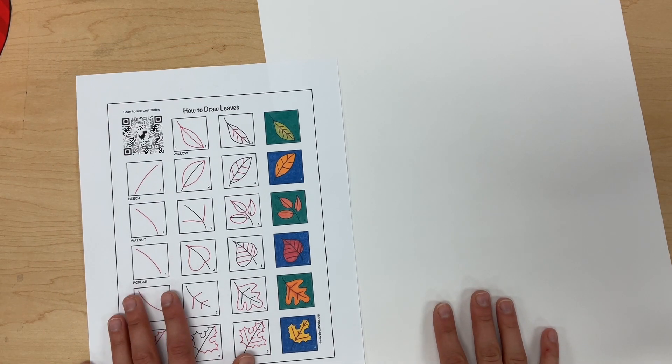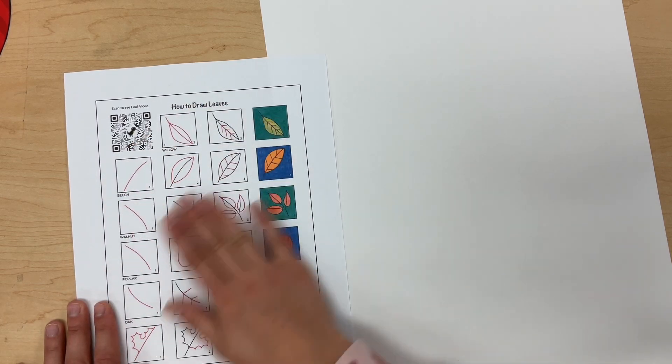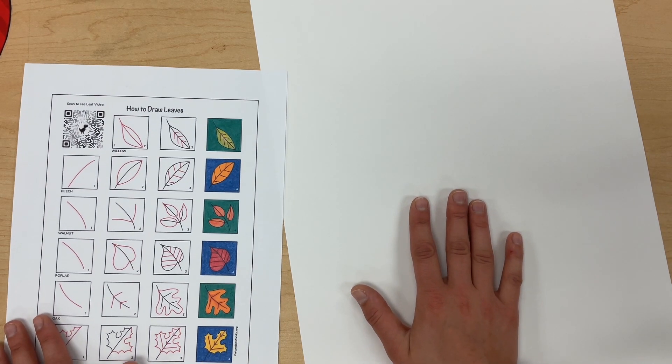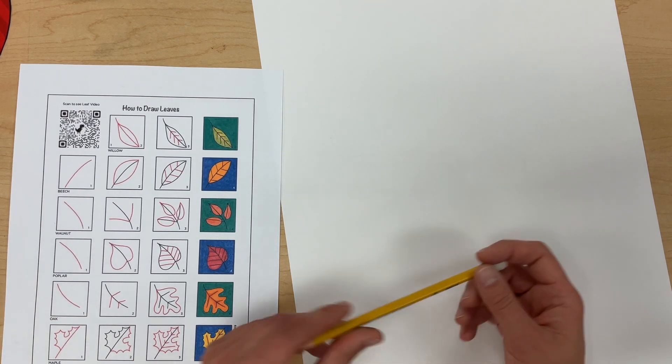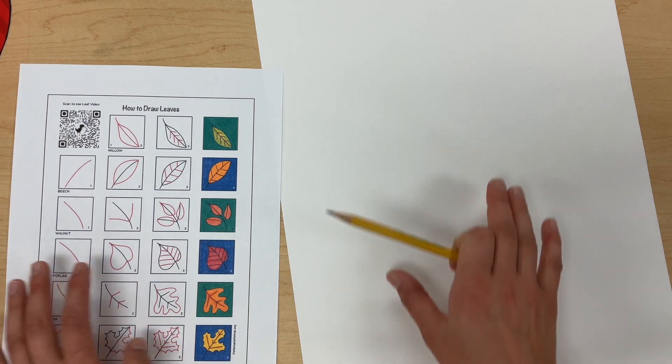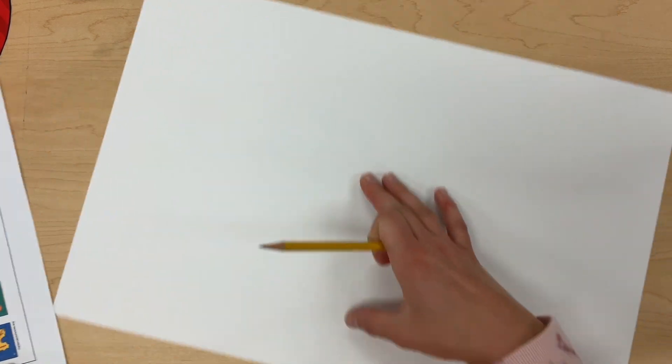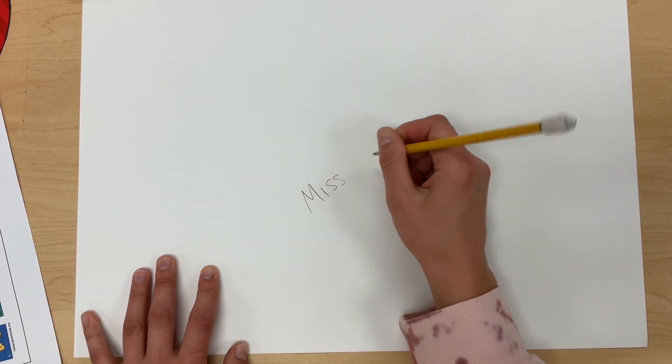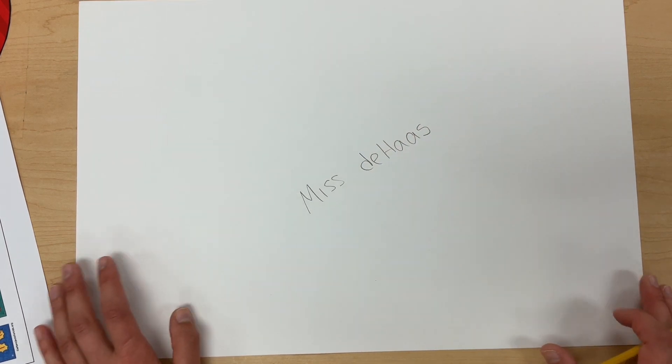So today when I go supply shopping, I'm going to grab two things: I'm going to grab this how to draw leaves paper and I'm going to grab a giant white piece of paper that we're going to do our drawing on today. You should already have a pencil at your seat in the containers at your tables. So what I'm first going to do is when I get to my seat, I'm going to take my paper and I'm going to write my name and code. You can always ask a friend if you forget your code.